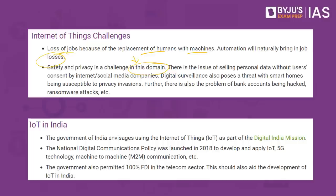The primary issue is privacy. Additionally, the cost of establishing IoT is high — it requires Internet, complicated data transfer between devices, security bugs that must be patched, and equipment to keep IoT working efficiently, so costs increase over time. In India, the government envisages using IoT as per the Digital India Mission. The National Digital Communications Policy was launched in 2018 to develop and apply Internet of Things, 5G technology, and machine-to-machine communication. The government also permitted 100% FDI in the telecom sector to aid IoT development.